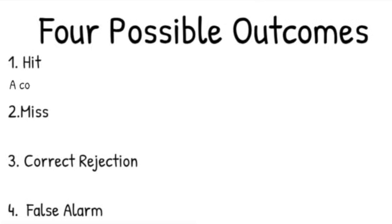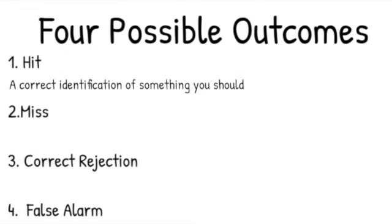So let's start with the first one, a hit. What is a hit? You get a hit when you correctly identify something that you're supposed to say yes to. That would be a proper email, one that's not spam, like a message from your friend that should go into your inbox. If the algorithm lets that go through, then that was a hit.